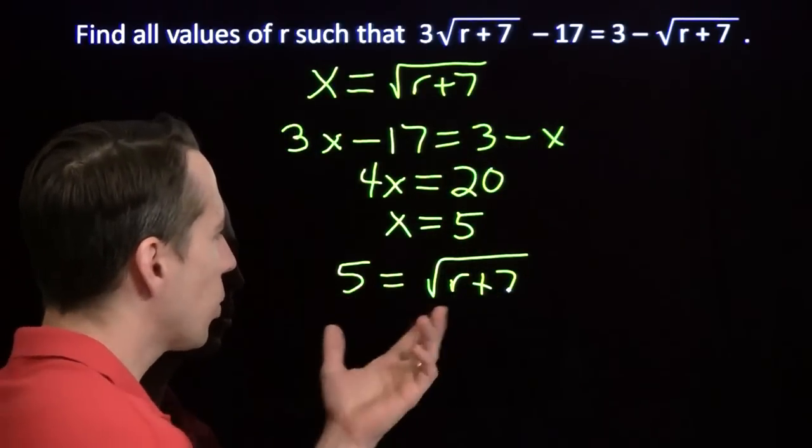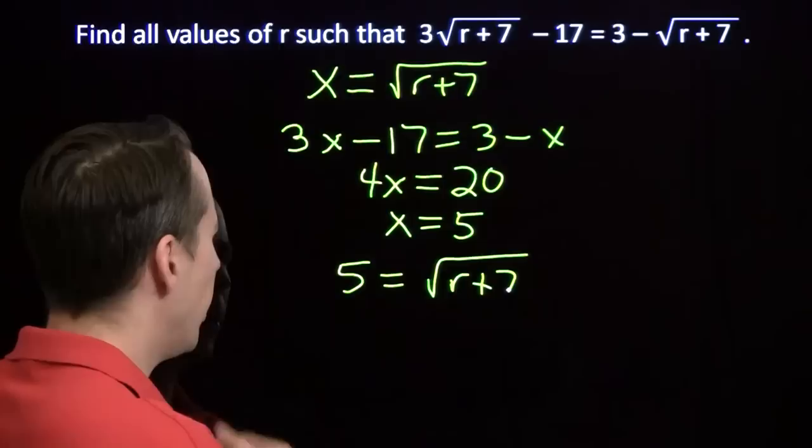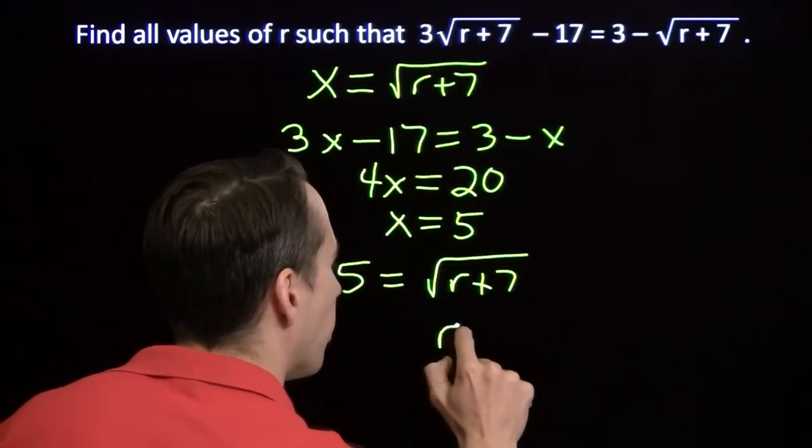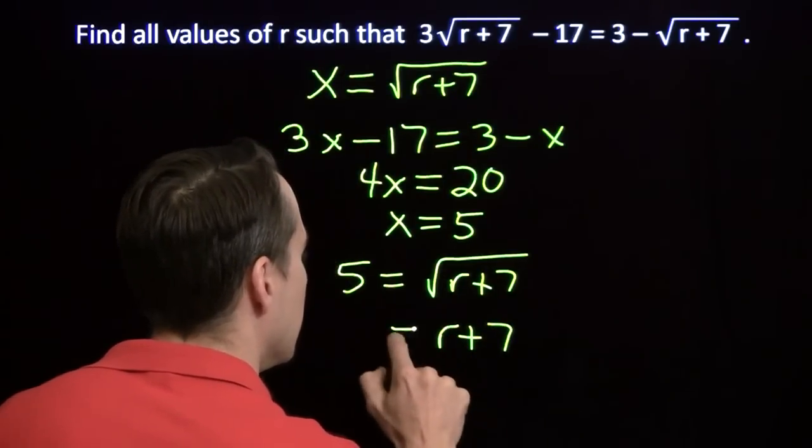From here, I can say, hey, wait a second. Square root of r plus 7 is 5. Well, let's see. That must mean that r plus 7 is 25.